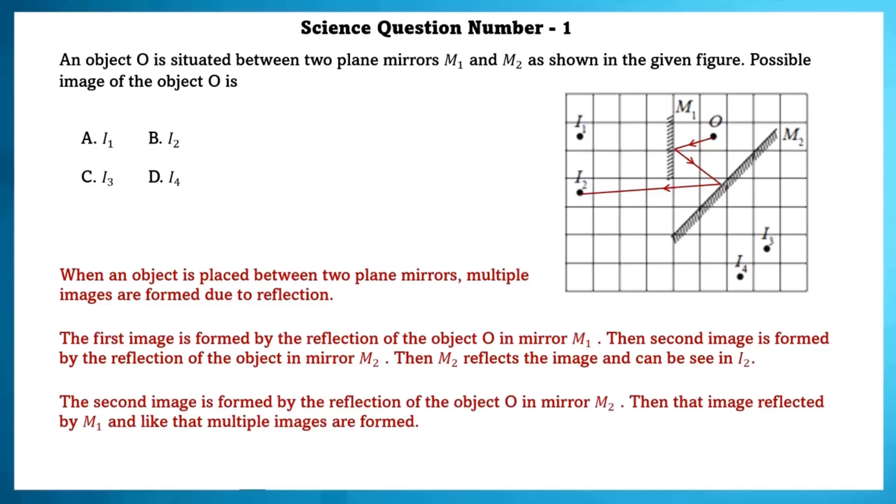The second image is formed by the reflection of the object O in mirror M2. Then that image reflected by M1 and like that multiple images are formed. So one major possible image of the object O can be at I2.